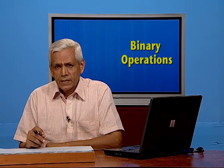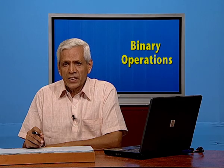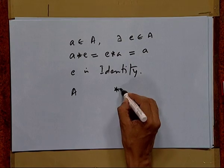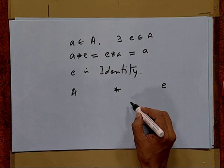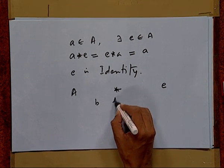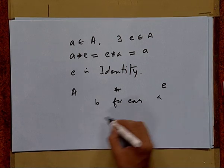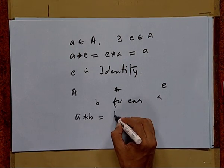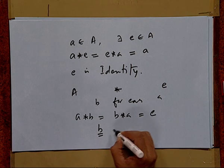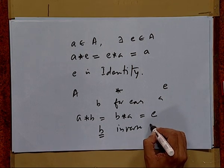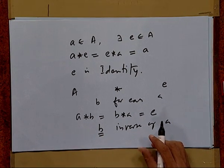We have one more concept known as the inverse of an element. For instance, if we have a set with an operation star with identity E, and we can find an element B for each A such that A star B is equal to B star A is equal to E, then B is called the inverse of A, and whenever B exists we say A is invertible.